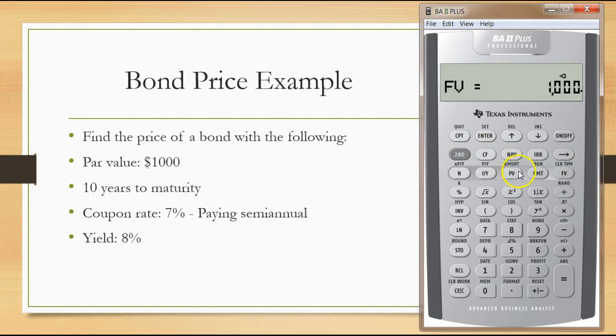We put $1,000 into that future value component, and then we compute present value. It gives us a present value of $932.05 is what you'll pay for this bond.